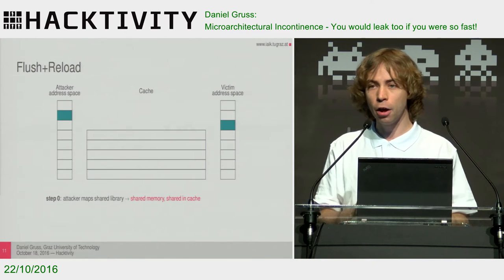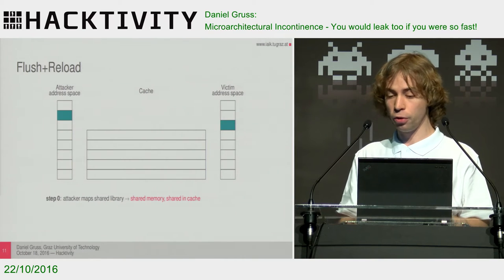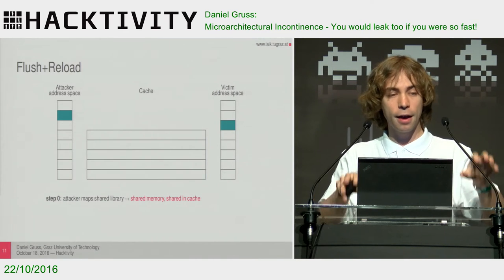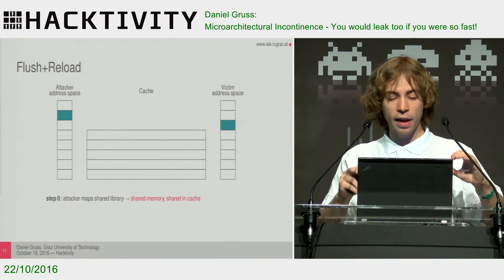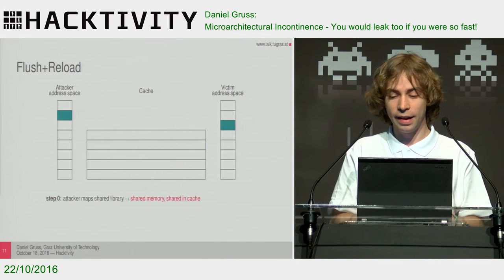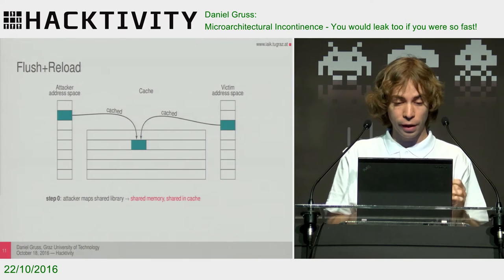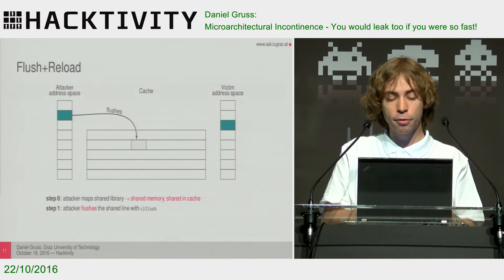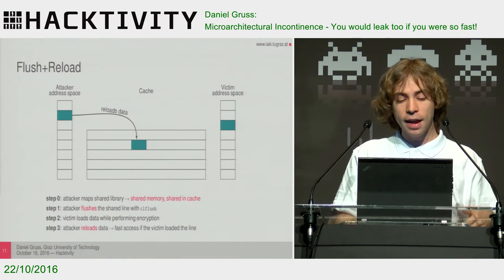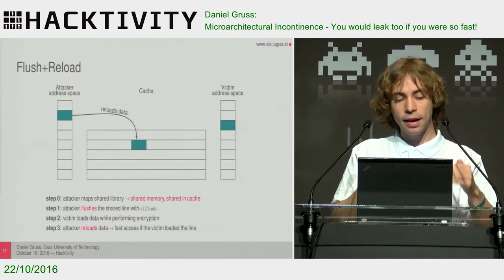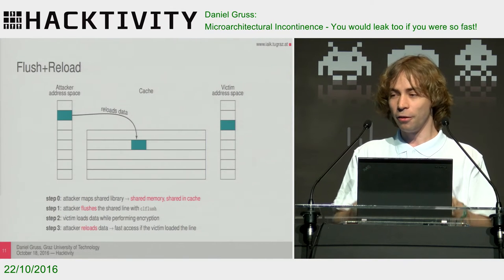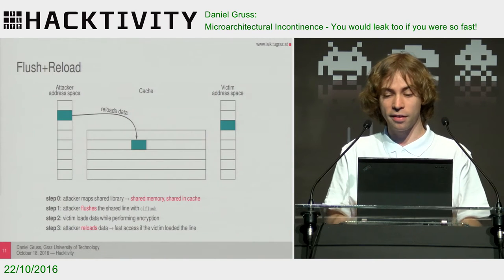This is the Flush+Reload attack — a very powerful attack. It's also the attack primitive I used in the demo I just showed you. The Flush+Reload attack works like this: you have an attacker program and a victim program running. They have separate virtual address spaces but use the same shared library. A shared library is shared in memory, and because the cache is based on physical addresses, it's also shared in the cache. The attacker flushes the code of the shared library from the cache, then reloads. The victim may load the data, and if the attacker then tries to reaccess that location, the attacker sees a cache hit although the data was just flushed. The attacker learns that the victim just reloaded the data into the cache.